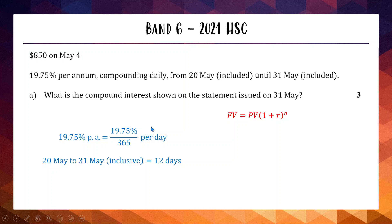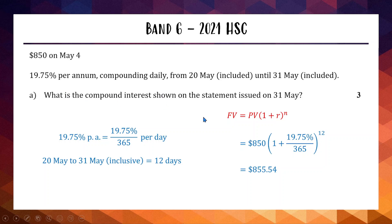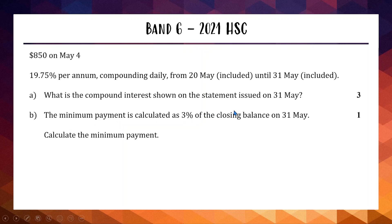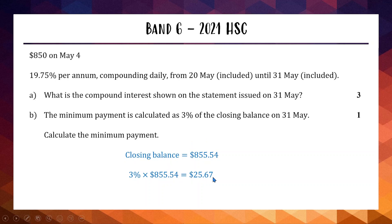Substituting into the future value formula: PV = $850, daily rate = 19.75% ÷ 365, n = 12. This gives a future value of approximately $855.54. But the question asks for the compound interest, not the total — so interest = $855.54 − $850.00 = $5.54. That's three marks for part (a). For part (b), the minimum payment is 3% of the closing balance ($855.54), which gives approximately $25.67 — one mark.